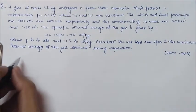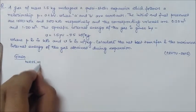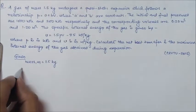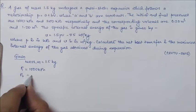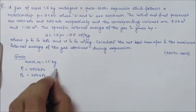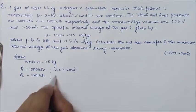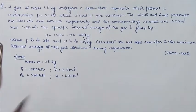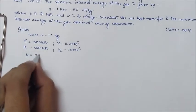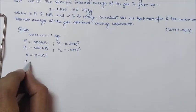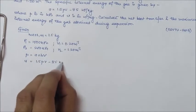First we will start with the given data. Mass m equals 1.5 kg. P1 is given as 1000 kPa, P2 is given as 200 kPa. V1 is given as 0.20 m³ and V2 is given as 1.20 m³. Also, the relations given are P equal to A plus BV, and specific internal energy small u equal to 1.5PV minus 85 kJ per kg.